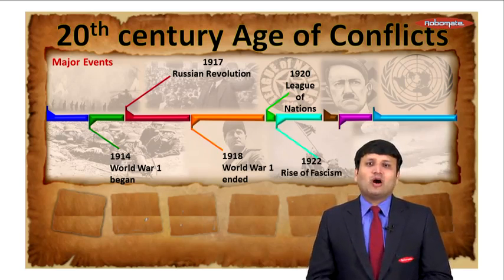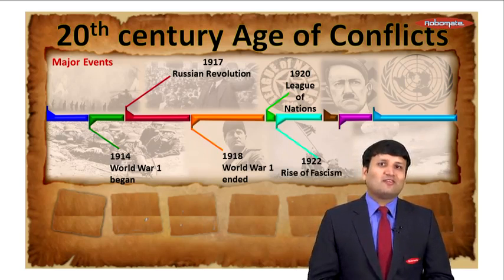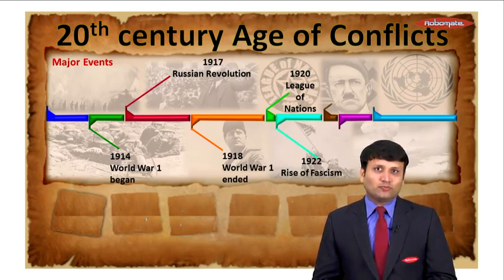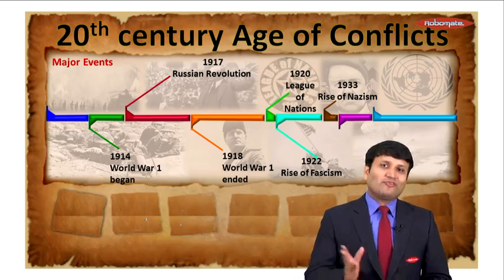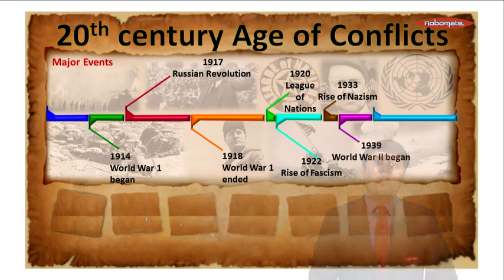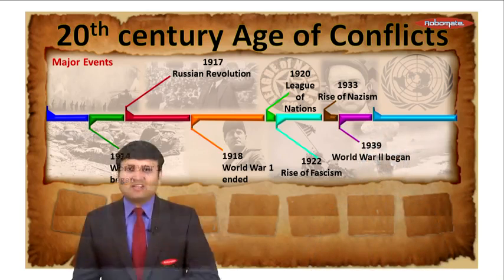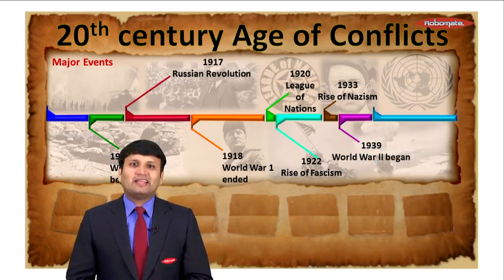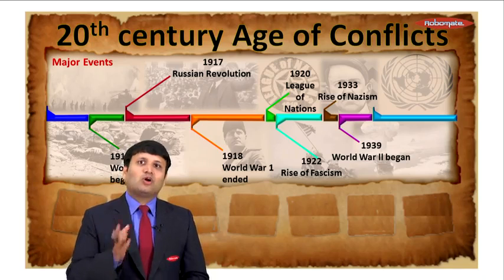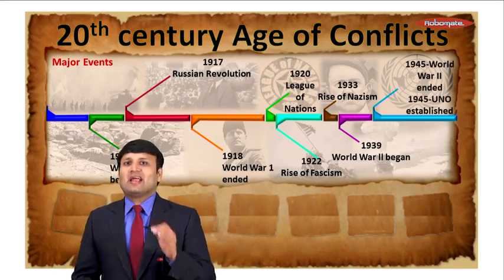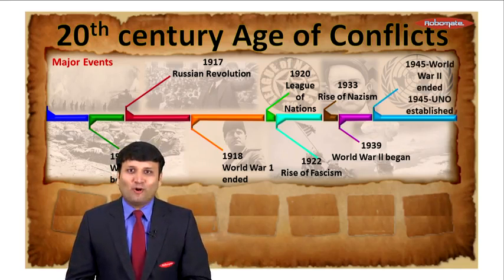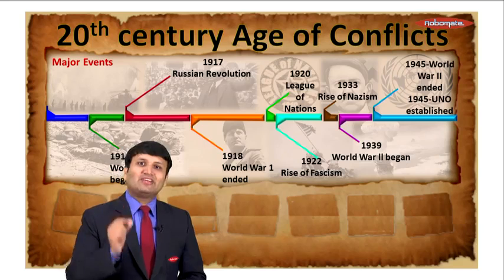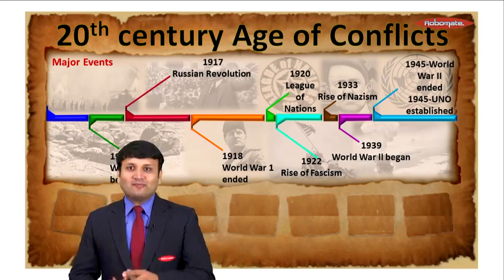In 1922, a violent ideology rose in the world called Fascism. A similar ideology came up in Germany in 1933 — the rise of Nazism. Eventually all these violent ideologies led to another world war, which started in 1939. This war finally ended in 1945, which led to another international organization being formed known as the United Nations Organization.